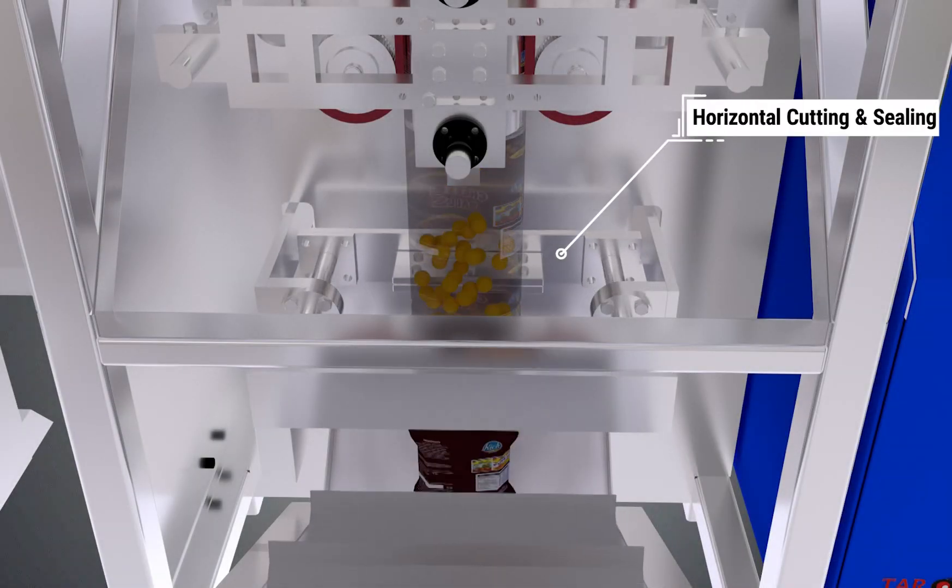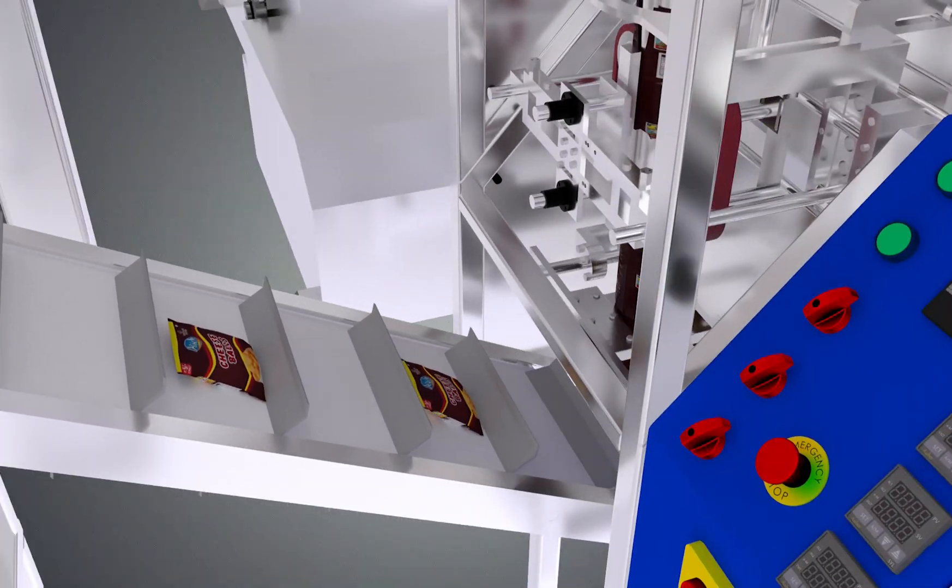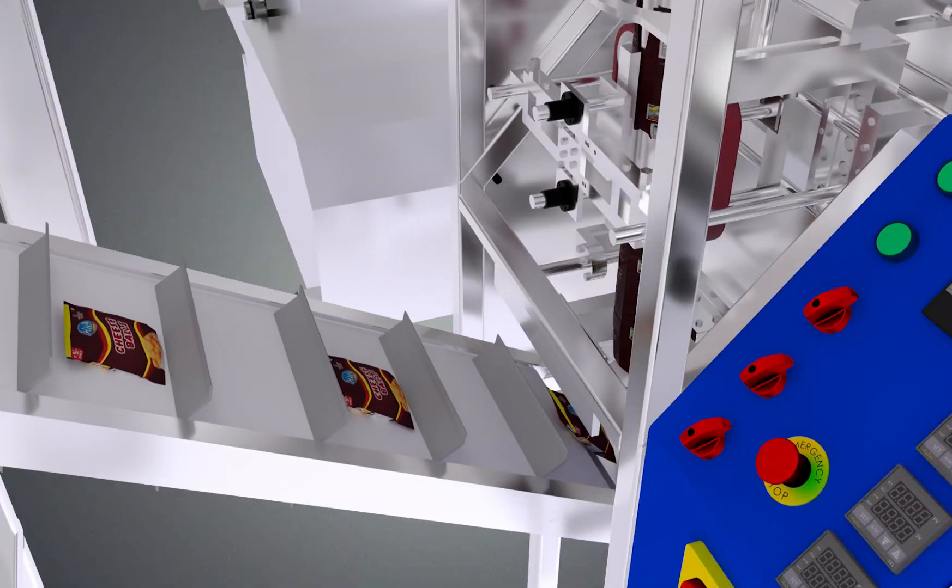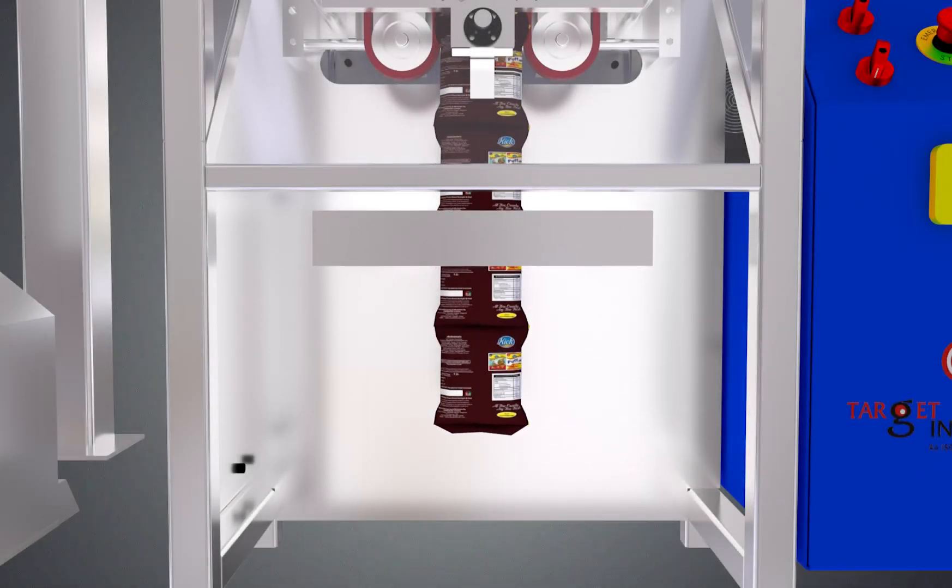There are two types of cutting and sealing processes. First, the user settable parameters in the machine help to pack the products individually or in a row. Second, a certain number of packets are filled and sealed but not cut to get a group of packets in a row.